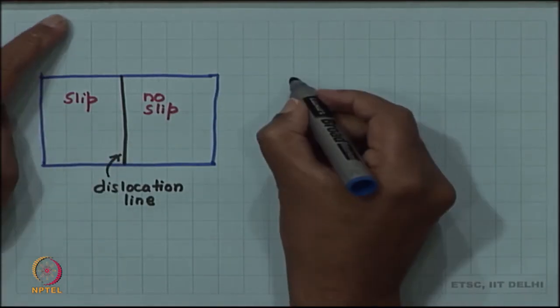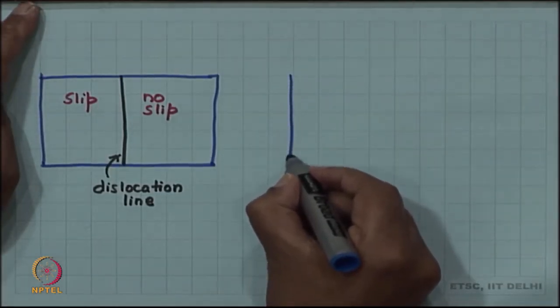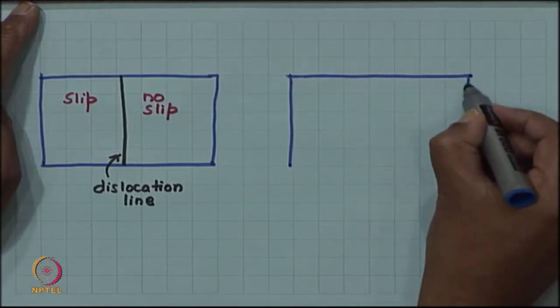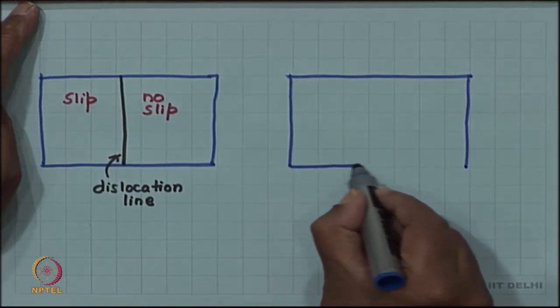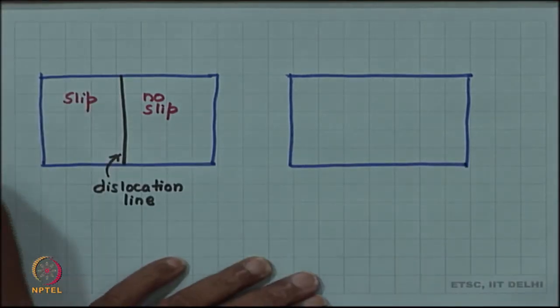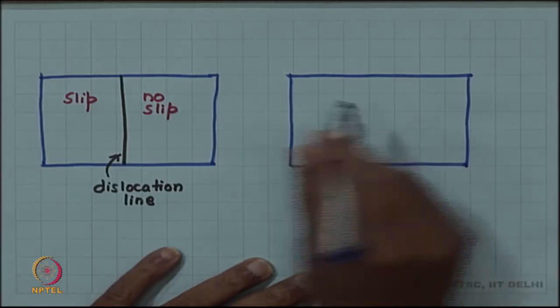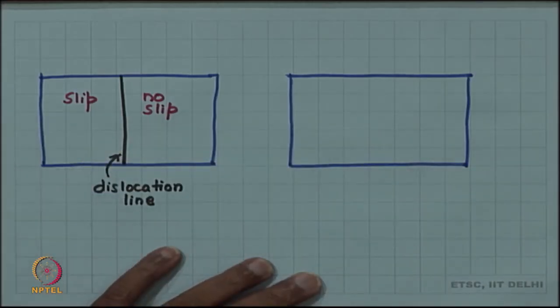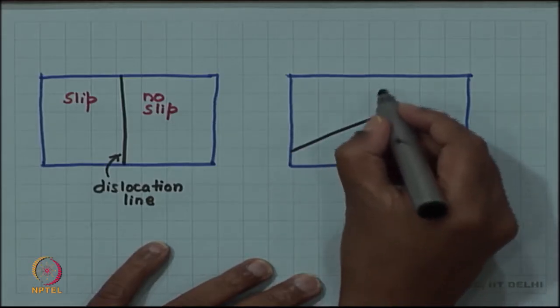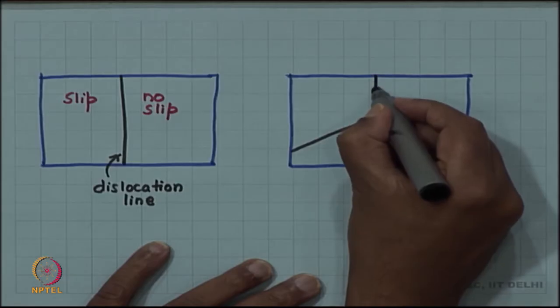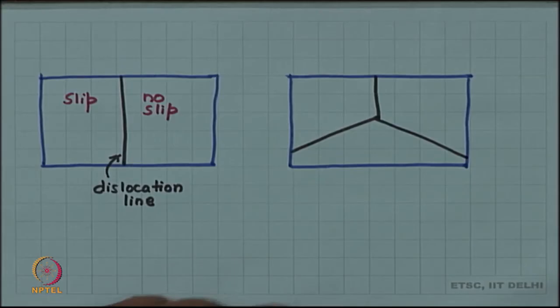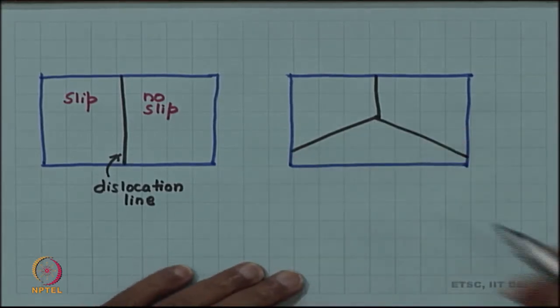Now, it is not necessary that only one dislocation runs throughout the crystal on a given slip plane. So if I have a slip plane and then I divide the plane into more than one regions, let me say instead of two, now I have divided into three regions, so I have drawn three lines.